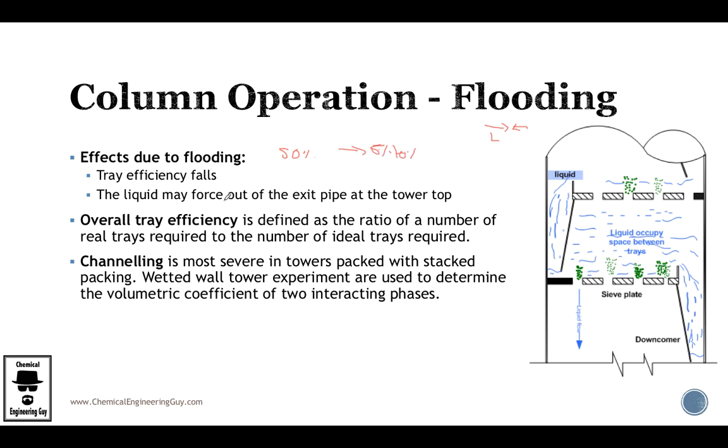The liquid may force out of the exit pipe at the tower top because this is not a steady state. What happens is that it keeps flooding and flooding up to maybe going backwards of the flow rate right here. So you've got to be careful because if you keep operating this way, you can have this reverse flow rate.